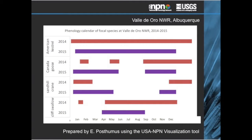Here is an example of a phenology calendar created using the visualization tool. You see a comparison between observations collected in 2014 versus 2015 for four species of birds visiting the Valle de Oro National Wildlife Refuge in Albuquerque, New Mexico. Managers at the refuge are interested in understanding the phenology of animals visiting because they are in the process of converting the newly acquired property from agricultural land to native bosque. Having this information will allow them to better understand animal visitors and track changes as the land returns to native habitat.